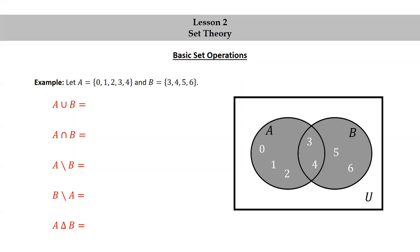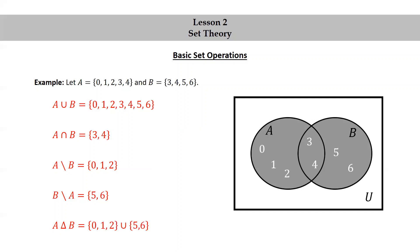So A union B is everything: the set consisting of 0, 1, 2, 3, 4, 5, and 6. The intersection of A and B is the set consisting of 3 and 4. A minus B is the set consisting of 0, 1, and 2. B minus A is the set consisting of 5 and 6. The symmetric difference between A and B is the union of the previous two: {0, 1, 2} union {5, 6}, which is the set consisting of 0, 1, 2, 5, and 6.